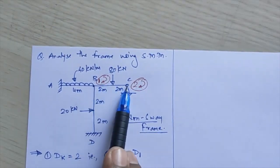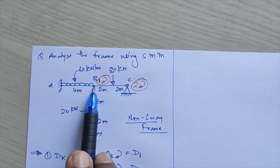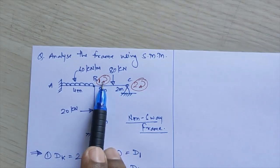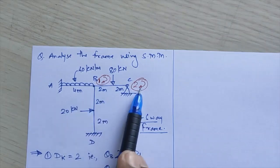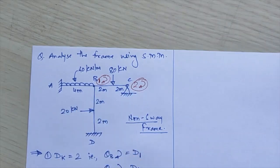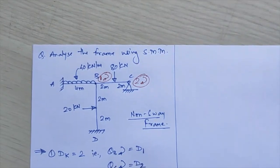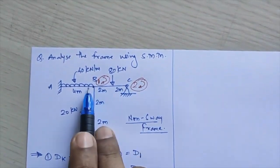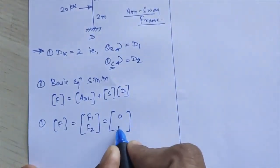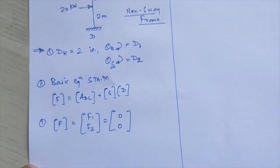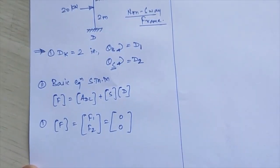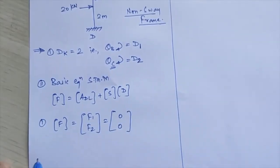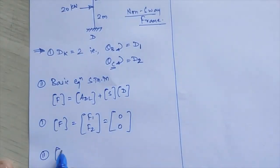If rotation is the redundant, you check whether a corresponding moment is acting; if displacement is the redundant, you check for the corresponding force. Here both redundants are rotations and at both points B and C no moment is given, so F1 and F2 will both remain equal to zero. Now we have to calculate the ADL matrix.